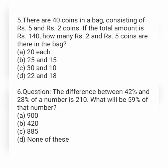Next question: there are 40 coins in a bag consisting of Rs. 5 and Rs. 2 coins. If the total amount is Rs. 140, how many Rs. 2 and Rs. 5 coins are there in the bag? Option A is 20 each, option B is 25 and 15, option C is 30 and 10, and option D is 22 and 18.